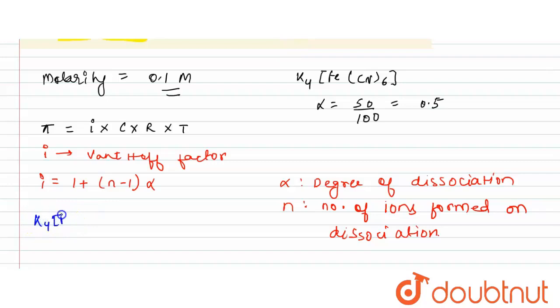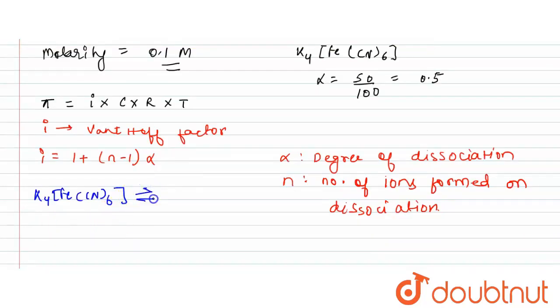So when K4Fe(CN)6 undergoes dissociation, it forms 4K+ plus Fe(CN)6-. Fe(CN)6 is a complex ion, so it exists in the complex form. So this is how the dissociation takes place.